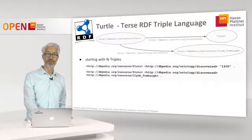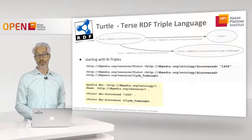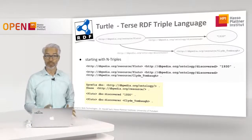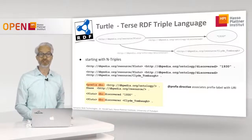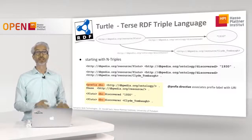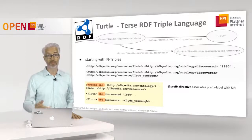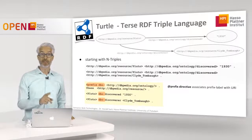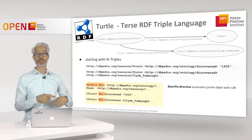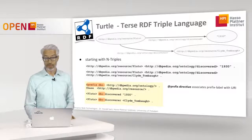Now let's look at the first Turtle representation. Here in the yellow box you see the Turtle. We have more lines, but the lines are shorter, which is nice. The first thing we can do is use abbreviations, but we have to denote what these abbreviations really mean. We can introduce so-called prefixes. Here I define a prefix DBO, and a prefix always closes with a colon — the colon separates the prefix from the suffix. DBO stands for the DBpedia ontology. Within the triples in Turtle notation, the property is rather short, because instead of using the entire URI, I can simply use the defined prefix DBO and a colon. This saves a lot of space and is much easier to read.